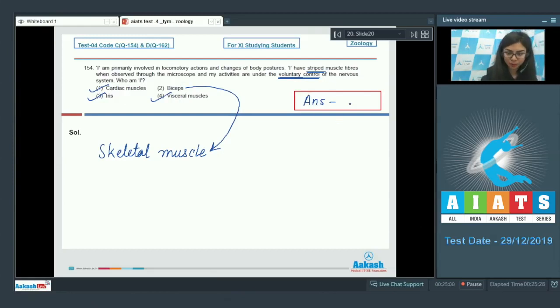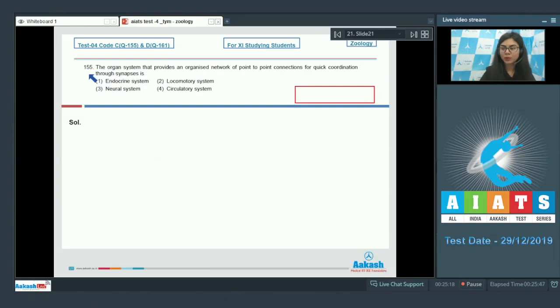Question 155: The organ system that provides an organized network of point to point connections for quick coordination through synapses is - endocrine system, locomotory system, neural system, or circulatory system? Students, point to point connections for quick coordination is possible because of signaling and this signaling is done by neurotransmitters. These are chemicals that are released at synapses between neurons and these facilitate signaling.